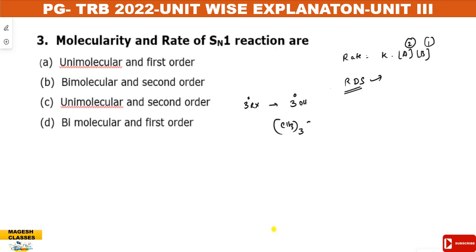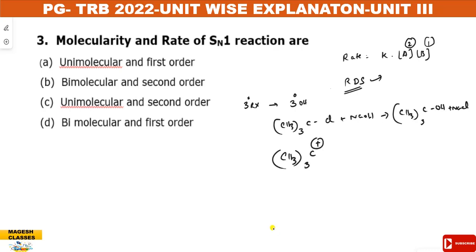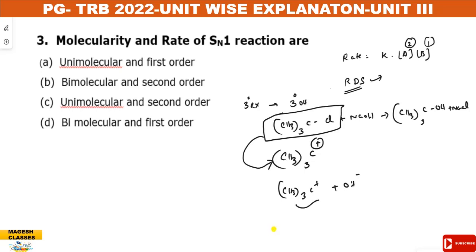In the SN1 reaction, tertiary butyl chloride reacts with NaOH. In the first step, the carbocation is formed. Only one molecule is involved — tertiary butyl chloride. In the second step, the tertiary carbocation (C+) undergoes nucleophilic attack. So in the second step, two molecules are involved.